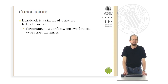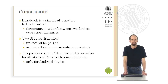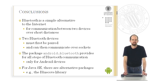What did we learn in this unit? We learned that Bluetooth is a simple alternative to the internet for communicating data between two devices over short distances. We saw that communication proceeds in two stages: first, two Bluetooth devices have to be paired, and then they can communicate over Bluetooth sockets. For Android, the package Android.Bluetooth provides for all steps of Bluetooth communication, but it can be used only for Android devices. If you wish to employ Bluetooth on your notebook, you have to use alternative packages for Java SE — for example, the BlueCove library. Thank you for your attention.